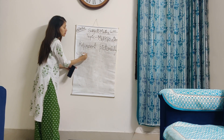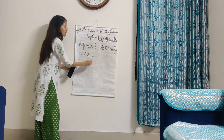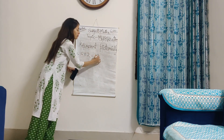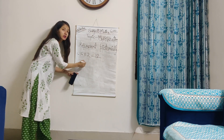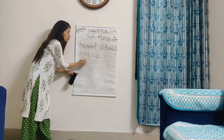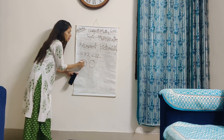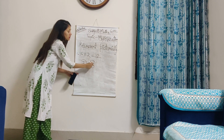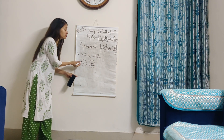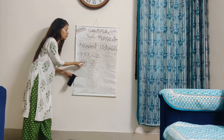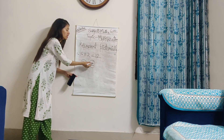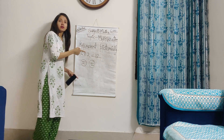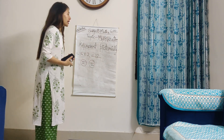6 twos are — it means 2 groups of 1, 2, 3, 4, 5, 6 — 2 groups of 6. Let's find out if the answer is right: 1, 2, 3, 4, 5, 6 — 7, 8, 9 — 10, 11, 12. It matches! That means our answer is right.